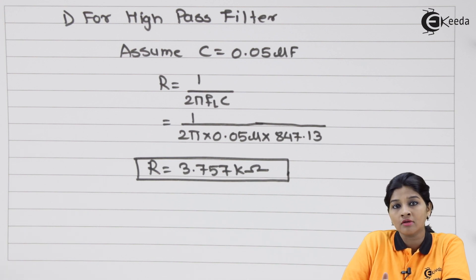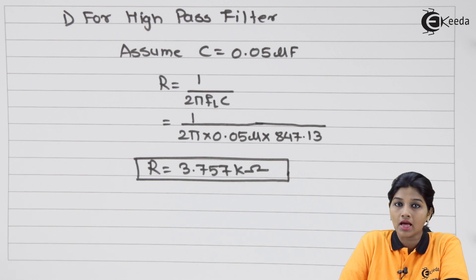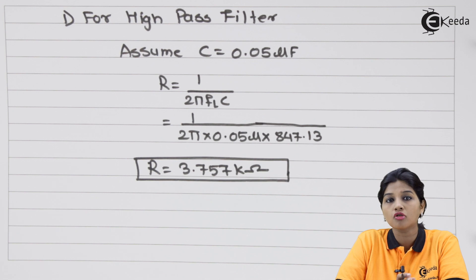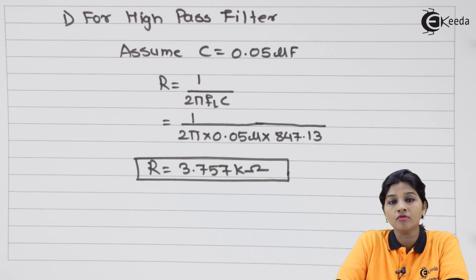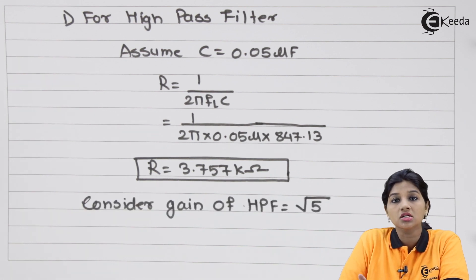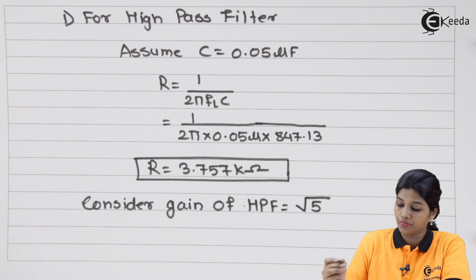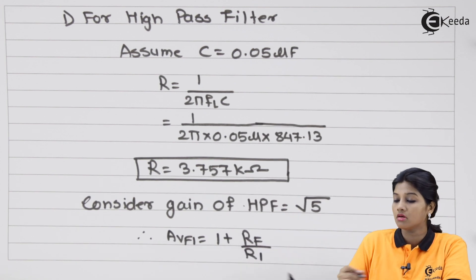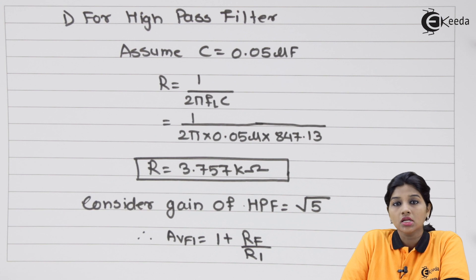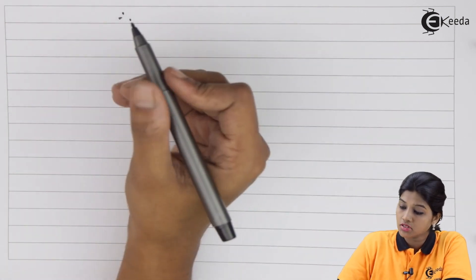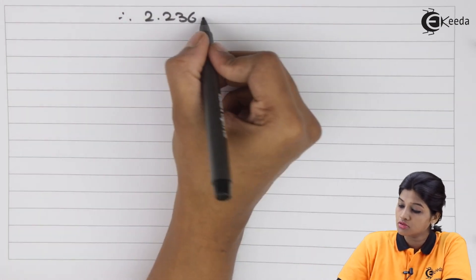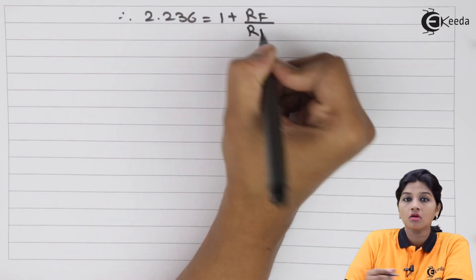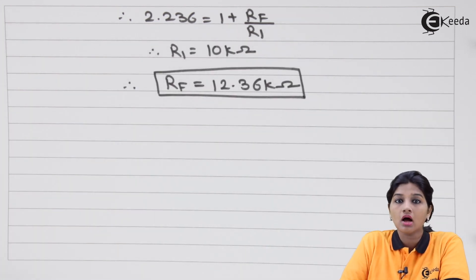Now calculate Rf and R1 based on the gain. The total gain is 5, which is the product of gain of high pass and low pass filter. For simplicity, Avf1 equals Avf2, so each stage gain equals root 5 (approximately 2.236). Using the non-inverting formula Avf1 equals 1 plus Rf/R1, and assuming R1 equals 10 kilo ohms, we solve for Rf.